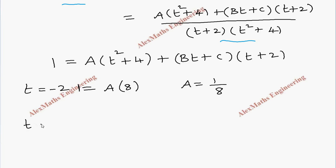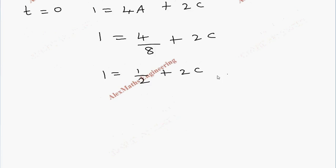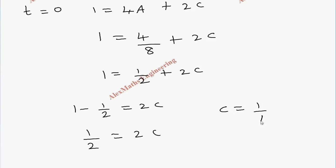Now let us take t equals 0. Then 1 equals 4A plus 2C. We already know A is 1 by 8, so substituting: 1 equals 4 by 8 plus 2C, which simplifies to 1 equals 1 by 2 plus 2C. Taking 1 by 2 to the other side, 1 minus 1 by 2 equals 2C, giving 1 by 2 equals 2C. So the value of C is 1 by 4.